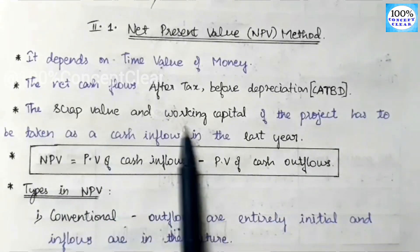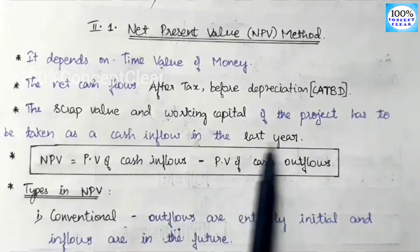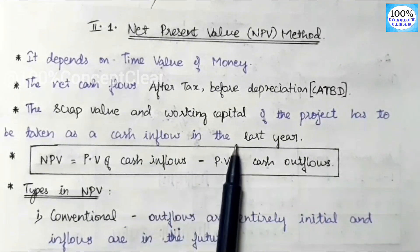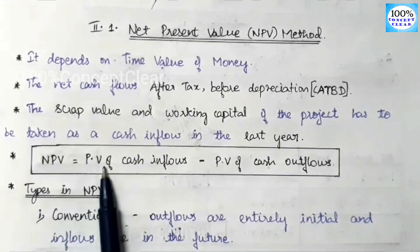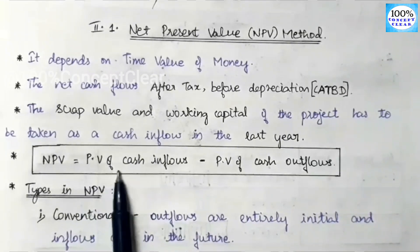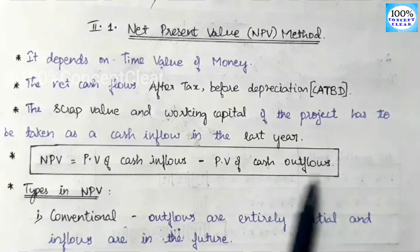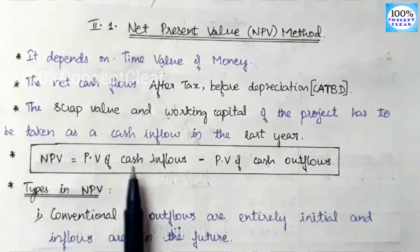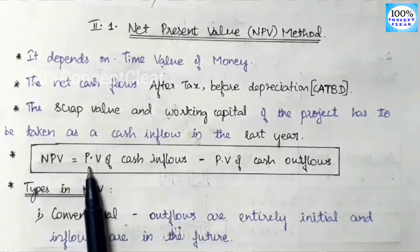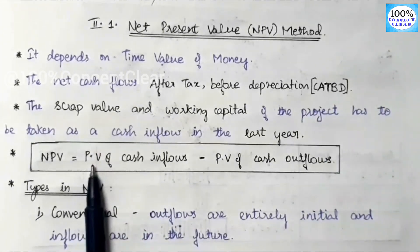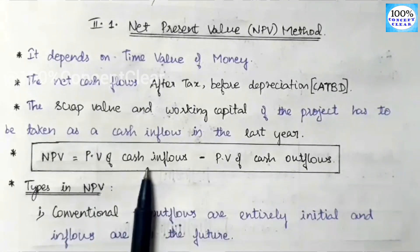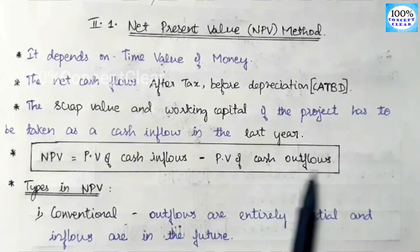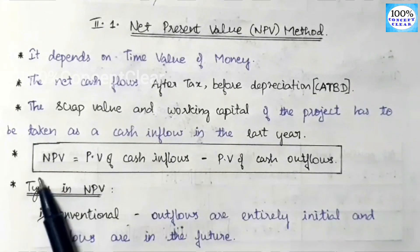The scrap value and working capital of the project have to be taken as the cash inflow in the last year. So in the last year of the project, we will get the cash inflow from scrap value and working capital. The net present value formula is: present value of cash inflows minus present value of cash outflows.